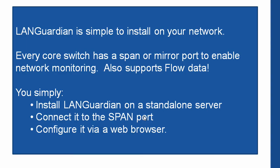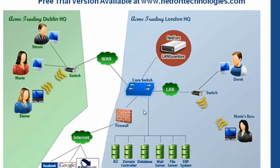The Languardian is simple to install in your network. Every core switch has a span and mirror port to enable network monitoring, and we also support flow data. To get it on your network, you simply install Languardian on a standalone server, connect it to the span port, and then configure it via web browser.